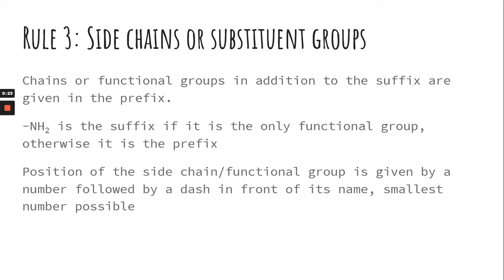So chains are functional groups in addition to the one that we claim in rule two. Now NH2 is a suffix if it's the only functional group, otherwise it's a prefix. So if you have an amine, then it's considered the functional group only if there's not another functional group.